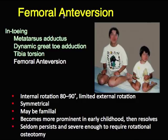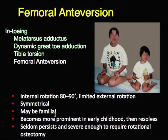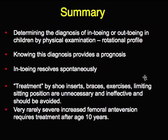Intowing can also be due to increased femoral anteversion, where internal rotation reaches 80 to 90 degrees, usually in mid-childhood, with concomitant limited external rotation. It is symmetrical and may be familial — as seen here with a mother and child sitting in the same posture. This posture is due to comfort, not the cause. It is seldom severe enough to create any problems and nearly always resolves without requiring specific treatment.